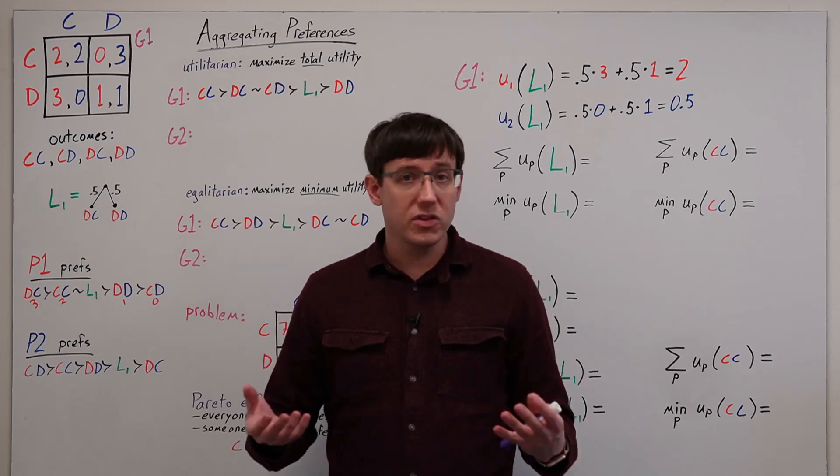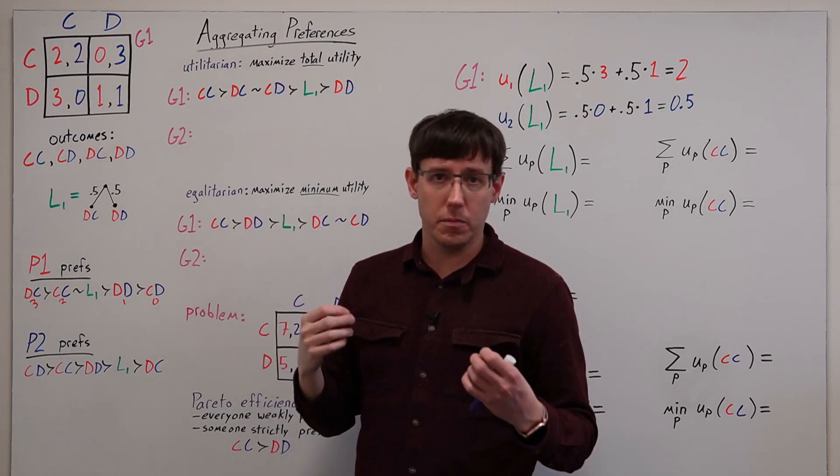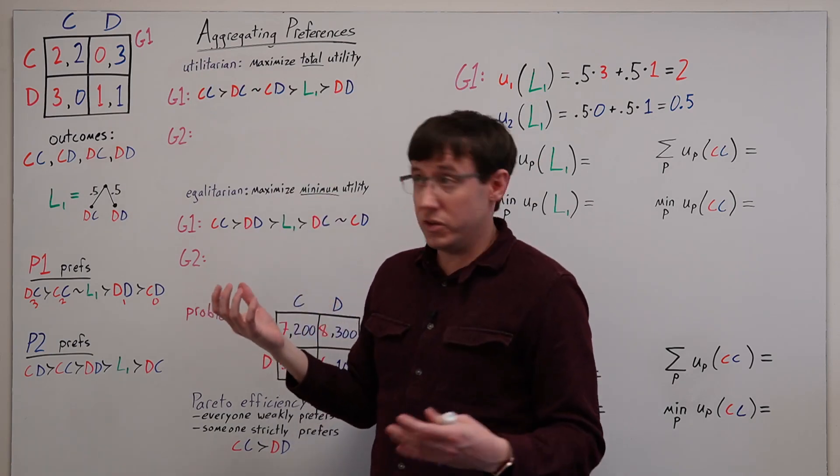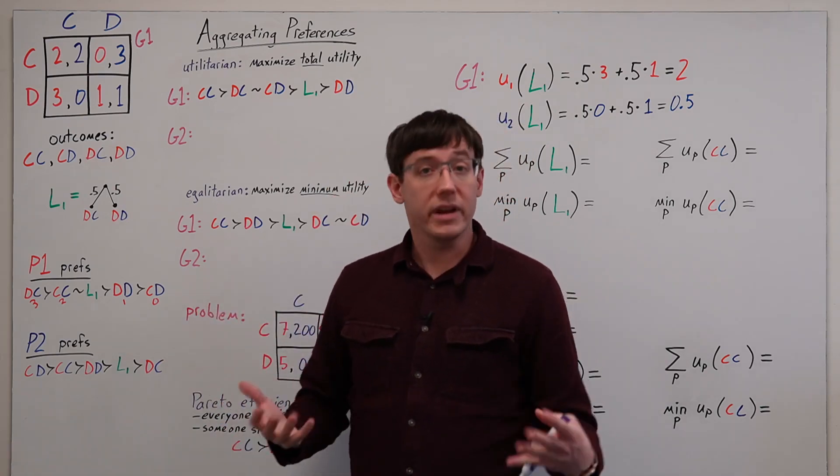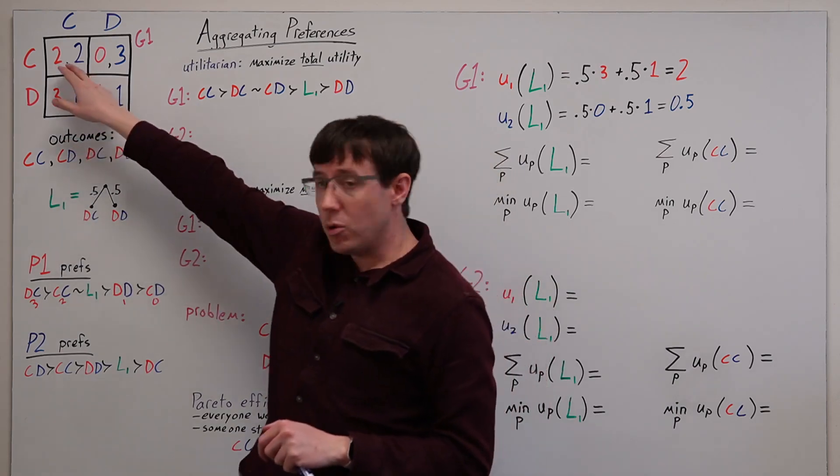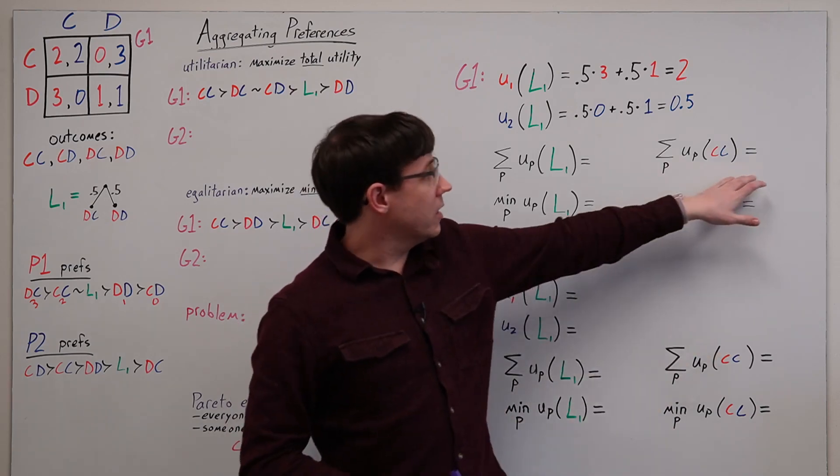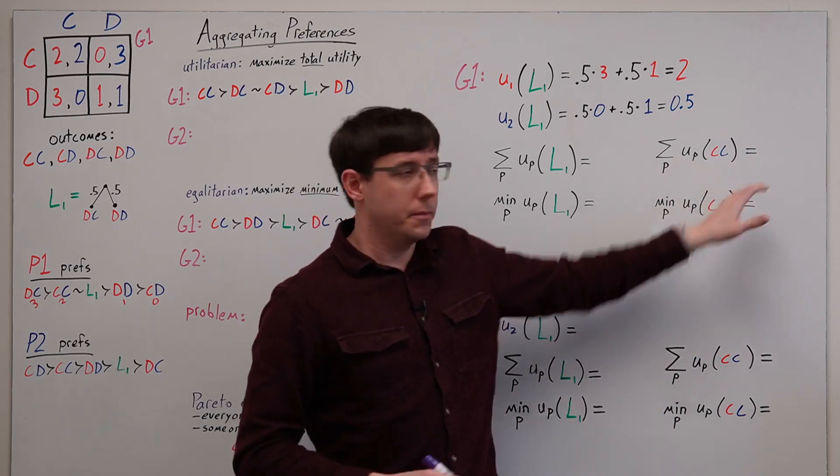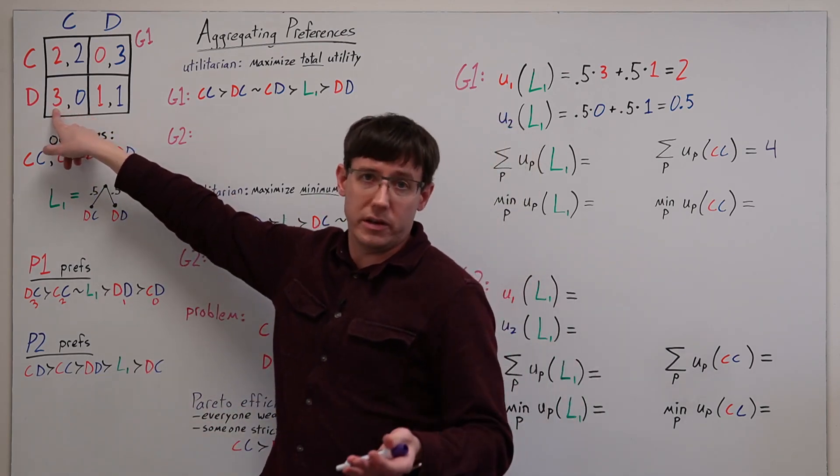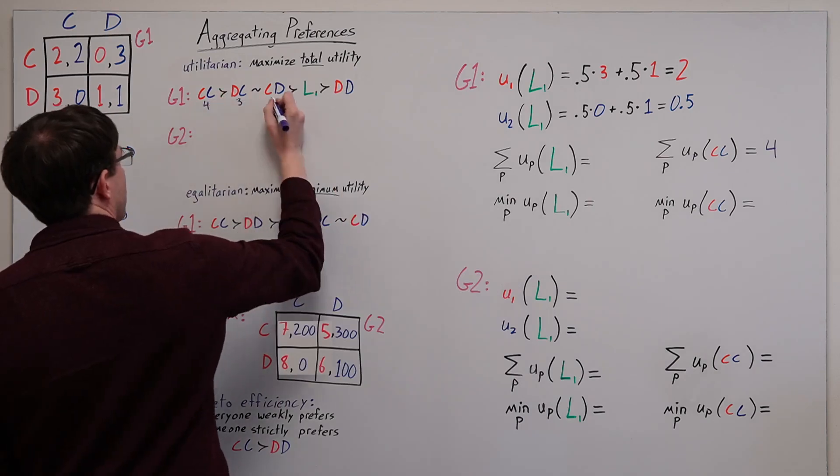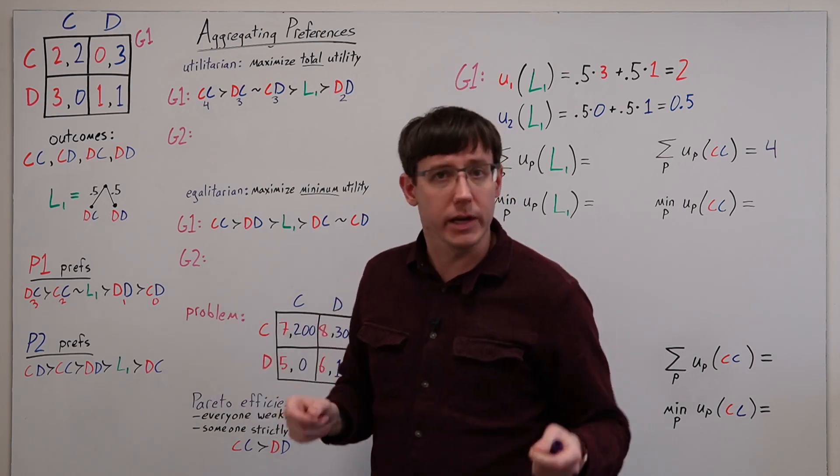And then we would consider outcomes that have a higher total utility better for the players overall. This idea of maximizing the sum of utilities is known as a utilitarian criterion, and it gives us a ranking over the outcomes and lotteries in this game. For example, if we evaluate the outcome CC, then we will add up the utilities for a total of 4, and we would consider that a better outcome than one where the sum of utilities is 3.